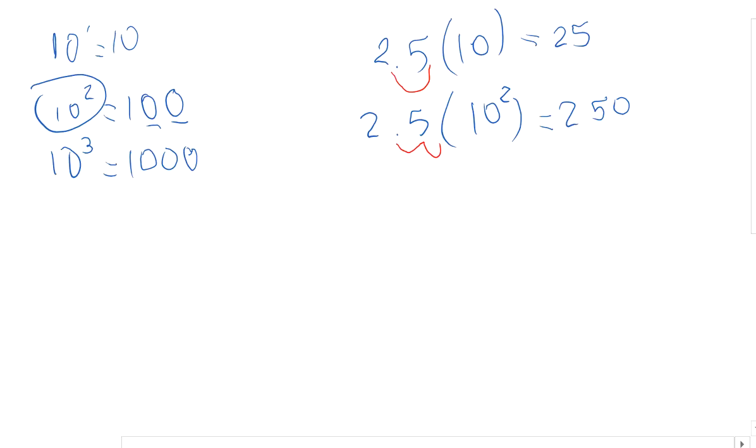Here you start noticing something really interesting, and that's basically the trick we're going to start using in scientific notation. When you multiply by 10, you just move the decimal point the desired amount of times based on the number of the exponents.